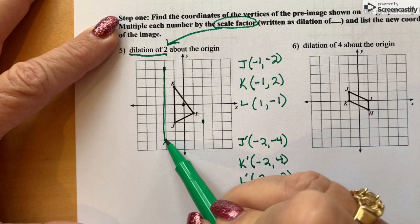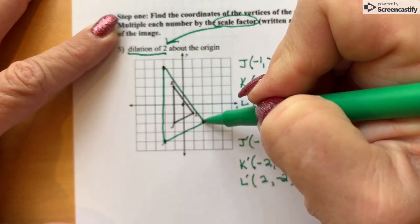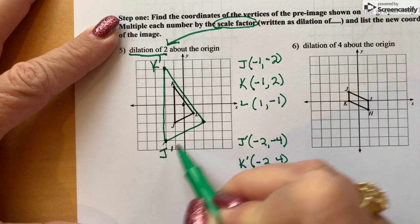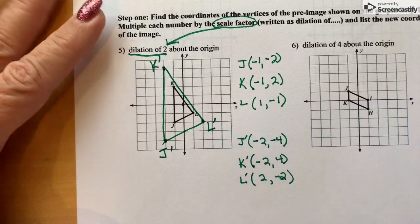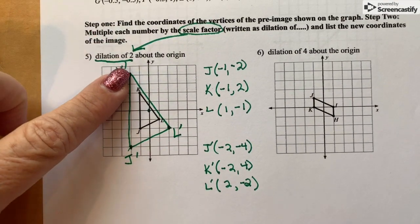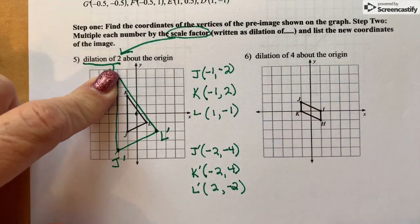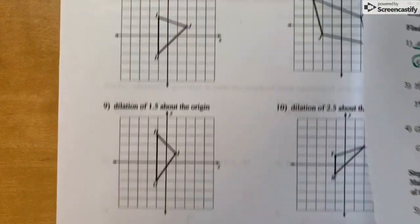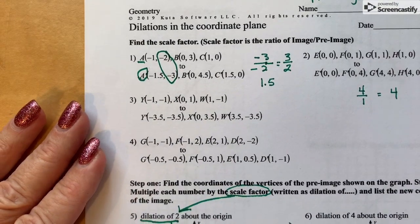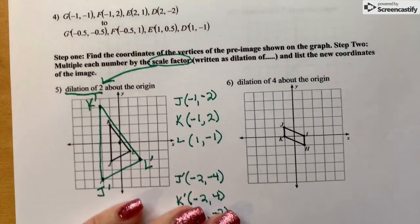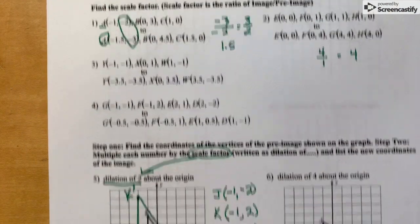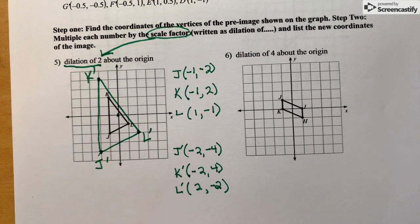So then you would sketch that in and label your points K prime, J prime, L prime. So that's what we're gonna be working on next week. I think that is enough to help you do number 6 and 7 and 8. Whatever is on the Go Formative. Happy scale factoring today and happy Thanksgiving to you tomorrow.